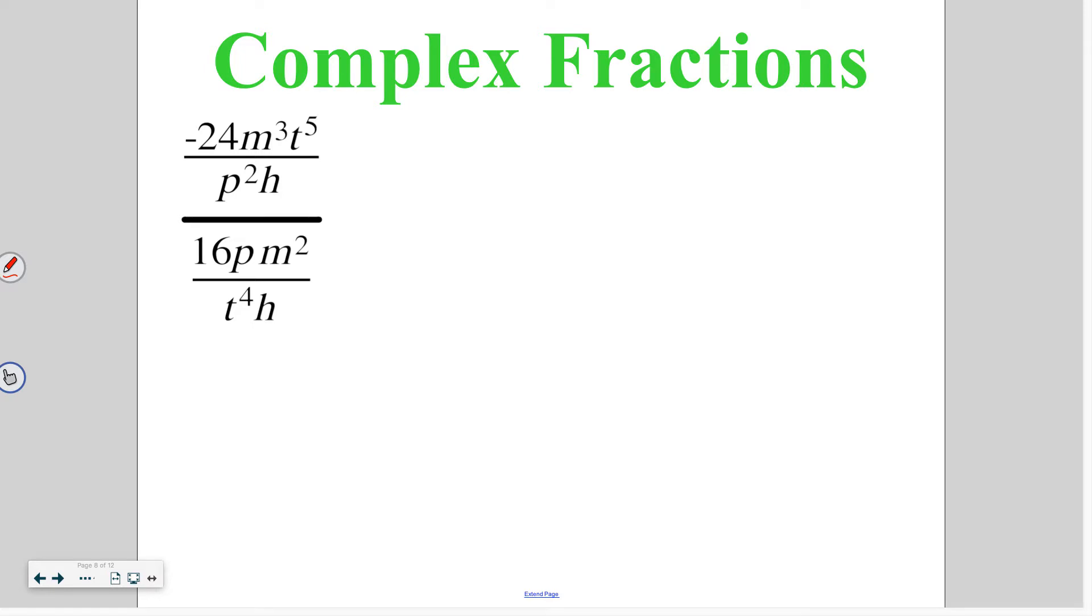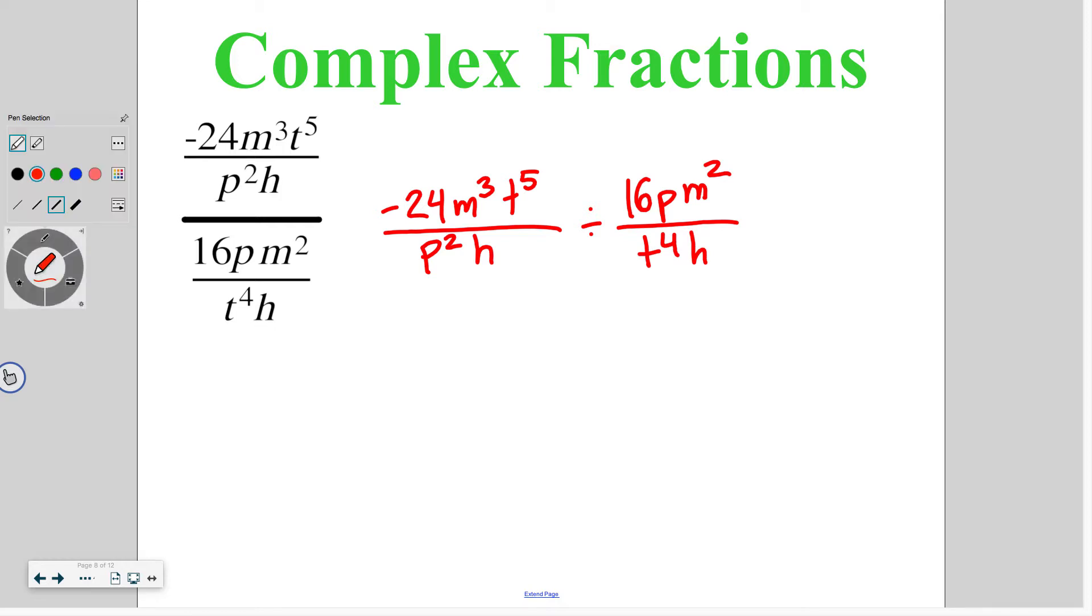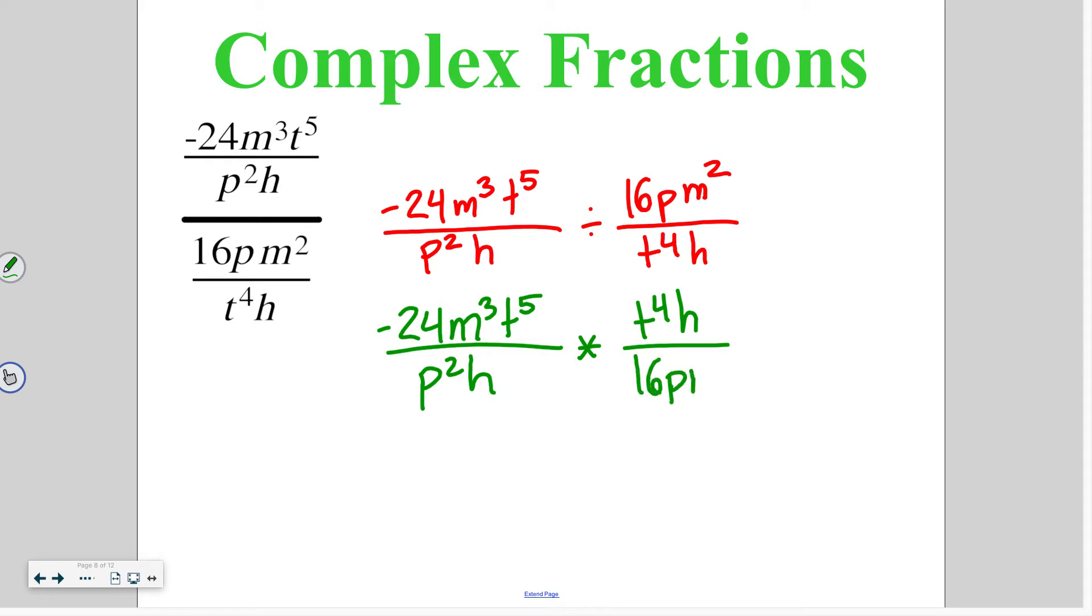This idea also applies to rational expressions. So instead of just numbers, but the idea remains the same. So we're still doing that top fraction which is negative 24 m to the third t to the fifth over p squared h divided by our bottom fraction of 16 p m squared over t to the fourth h. Again, we're going to want to simplify this. So I'm going to need to keep the first fraction the same, 24 m to the third t to the fifth over p squared h. Change division to multiplication and flip that second fraction so the numerator and denominator are reversed.